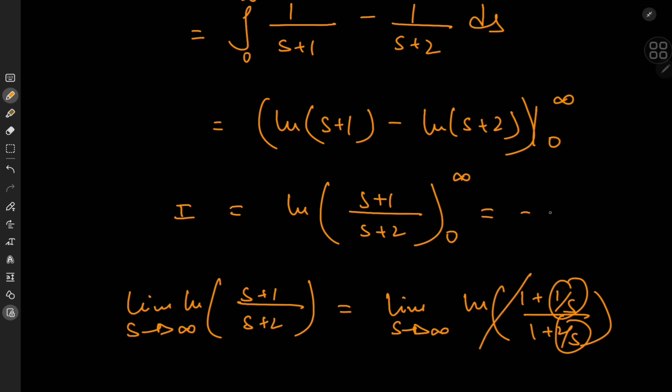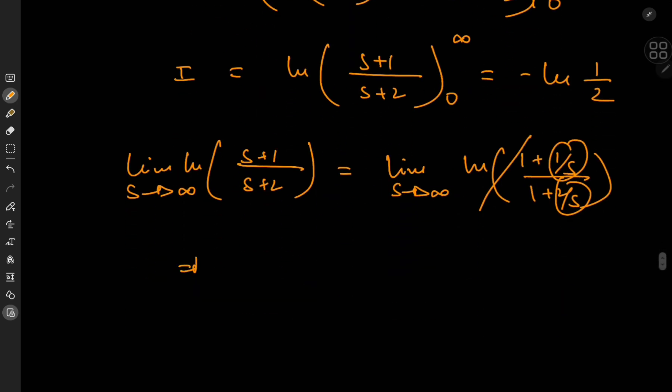That means I'm left with negative log 1 by 2 in the limit as s approaches 0, of course. And this, of course, is the same thing as log 2, which agrees with our result using Feynman's trick.